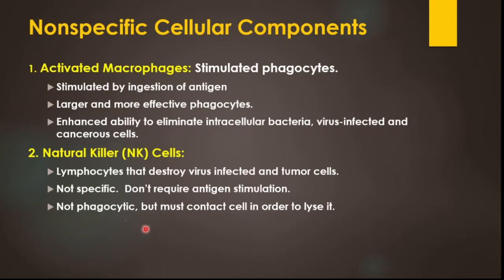Natural killer cells are not phagocytes, but they must make direct contact with target cells in order to cause lysis. To kill the cells, they must come into contact with them. If they don't have surface contact, the natural killer cells will not be able to do their work. Otherwise, they are non-specific and not specific to any kind of antigen — they can carry out degradation and destruction.